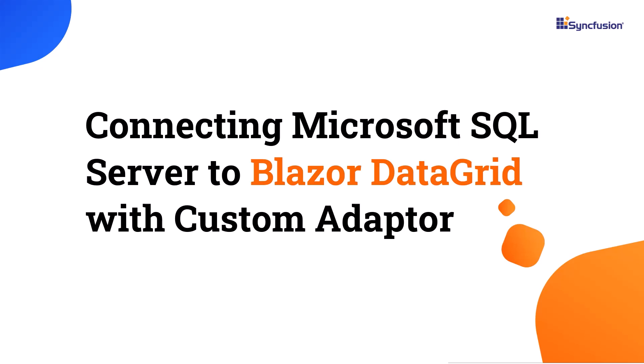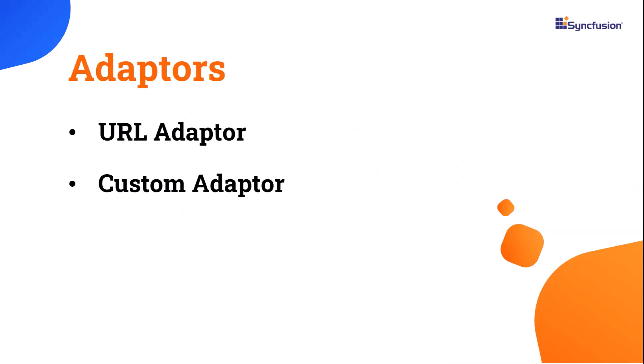Welcome to the Blazor Data Grid tutorial. In this video I will show you how to connect Microsoft SQL Server data to the Syncfusion Blazor Data Grid component. There are several ways to bind data to the data grid, such as using the data source property or the custom adapter. However, in this video I will specifically focus on remote data binding with a custom adapter. If you want to know about the URL adapter, check the video link provided in the description below.